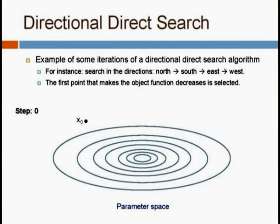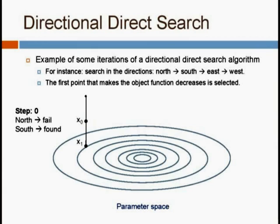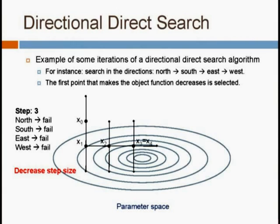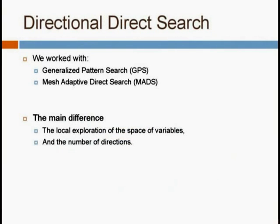Here is a small example for better understanding. For instance, we move north, south, east, and west in the parameter space. The first point that causes the objective function to decrease is selected for the next step. We walk north at the step size, try the directions, and if we find a better value, we move to the next step. When no better point is found, we decrease the step size and keep going. GPS and MADS are the directional direct search methods used, and the main difference between them is the local exploration of the space and the number of directions considered.